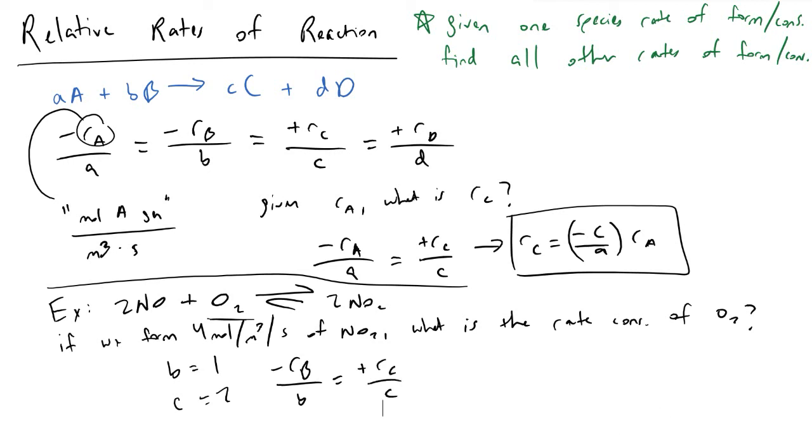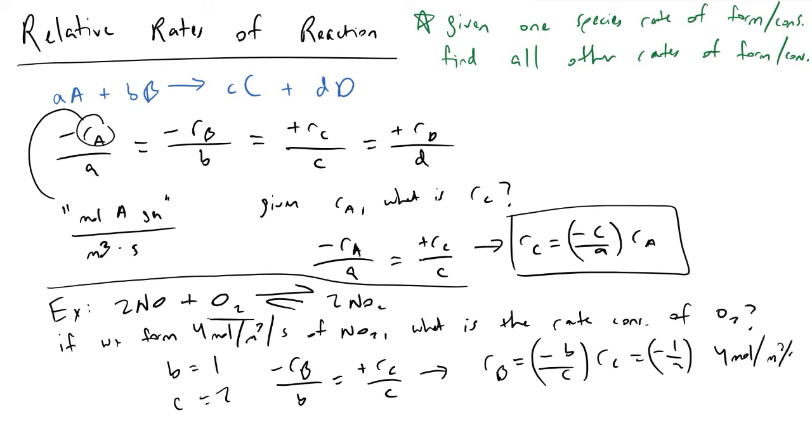Rearranging this to actually evaluate what the rate of consumption of O2 is, we can now say that RB is equal to minus B over C times RC, which is equal to minus 1 over 2 times 4 mole per cubic meter per second, which is equal to minus 2 mole per cubic meter per second.